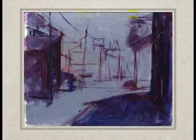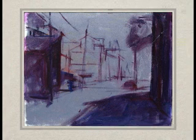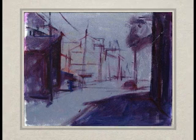Step 3 is to do the underpainting. Darks are most effective when transparent and thin. Since it is impossible to paint a thin transparent layer on top of an opaque paint unless it's completely dry, you have to do your transparent layers first.